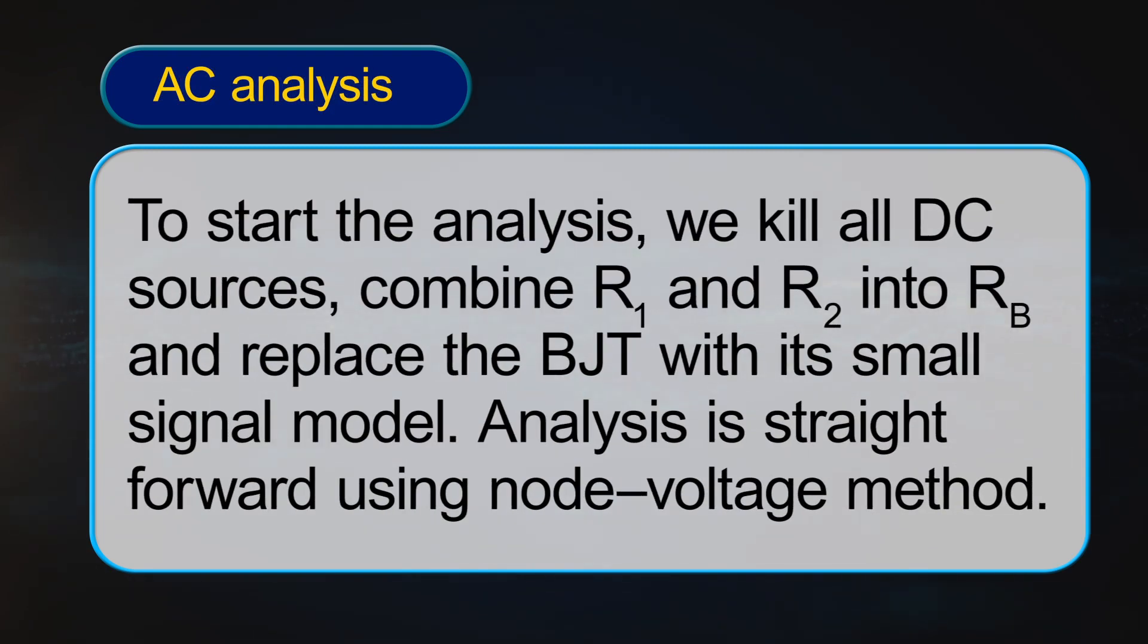AC Analysis: To start the analysis, we kill all DC sources, combine R1 and R2 into Rb and replace the BJT with its small signal model.